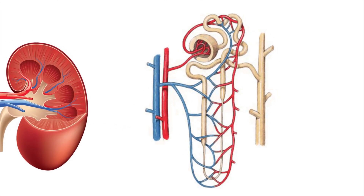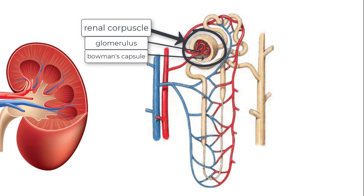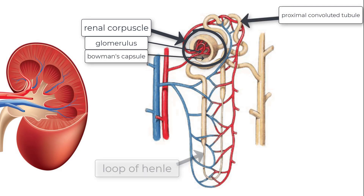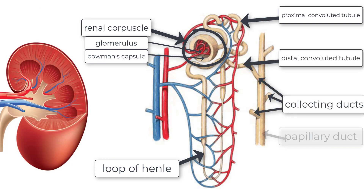In order of functionality, we have the renal corpuscle, which is made up of the glomerulus and Bowman capsule, the proximal convoluted tubule, loop of Henle, distal convoluted tubule, collecting ducts, and the papillary duct. All of these structures together constitute one functional nephron.